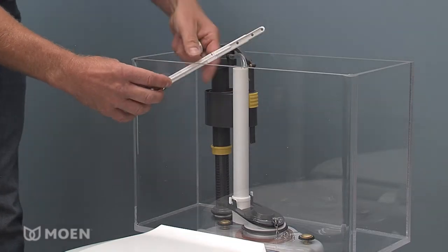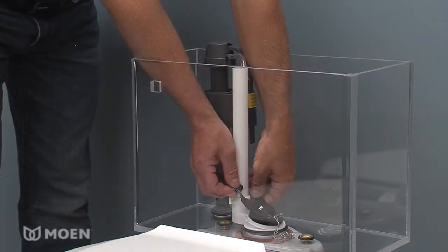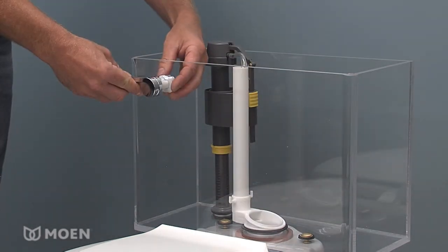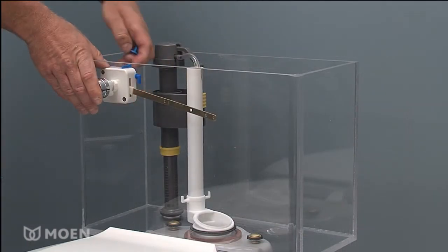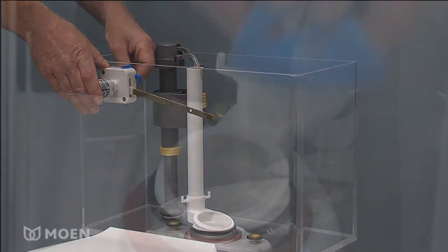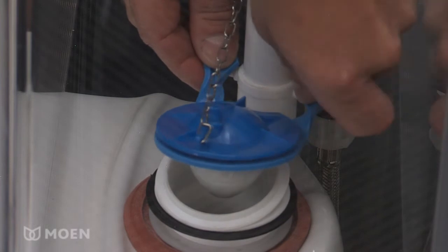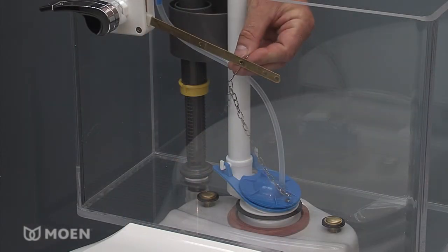No special tools required and no need to call a plumber. The dual action handle allows for a half flush for liquid waste and a full flush for solid waste. The kit includes both chrome and white tank levers to fit with any bathroom decor.